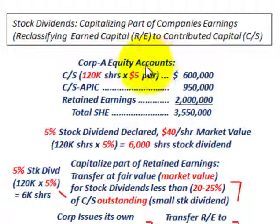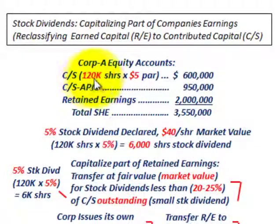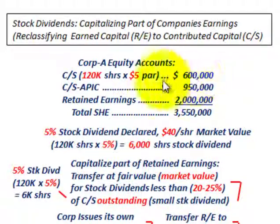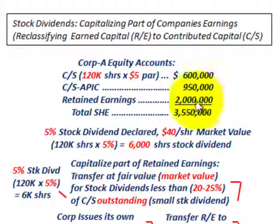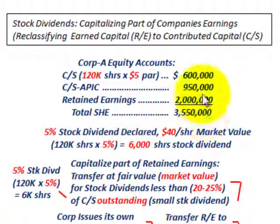Corporation A is going to have these equity accounts: common stock, additional paid-in capital, and retained earnings. For common stock, they have 120,000 shares outstanding at a $5 par value per share, for a total of $600,000. Additional paid-in capital to common stock is $950,000, and retained earnings are at $2 million. So total shareholders' equity is $3,550,000 — the sum of common stock, additional paid-in capital, and retained earnings.